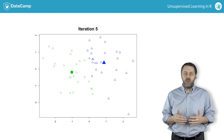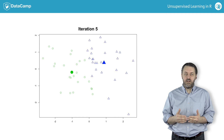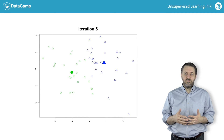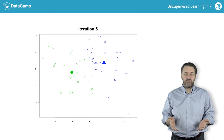There are other stopping criteria that you can specify for the k-means algorithm, such as stopping after some number of iterations or if the cluster centers move less than some distance.